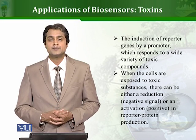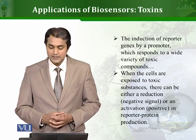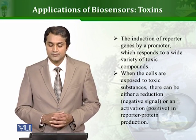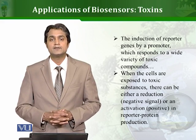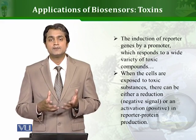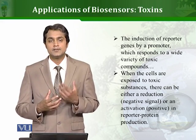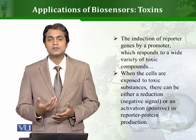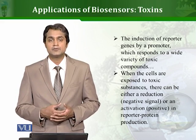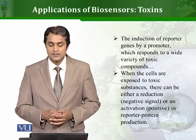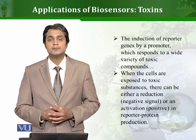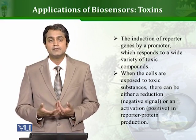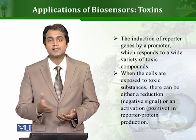There have been many biosensors which employ different principles to detect toxin compounds. For example, the induction of reporter genes by a promoter which responds to a wide variety of toxic compounds. In whole-cell assays, a recombinant vector or plasmid is used that typically contains regulatory genes inducible by the compound you want to detect, or its product. The promoter can be induced by the presence of different types of toxin compounds, and when activated, it transcribes the reporter gene.